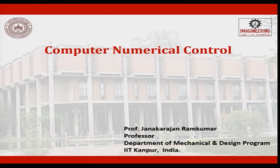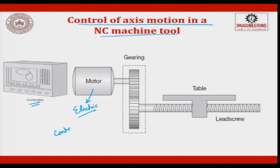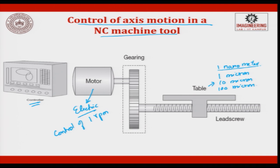Welcome to the next lecture on computer numerical control. Now let us see control of axis motion in a machine tool. With an ordinary electric motor, you can control a maximum of 1 rpm, but in a machine tool we are looking for accuracies of 1 micron, 10 micron, or 100 micron. Today we are also looking at 1 nanometer accuracy, used in machine tools, measurements, and nanotechnology. So 1 nanometer is a resolution.